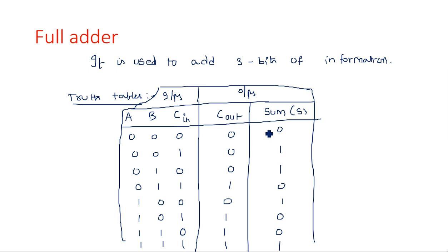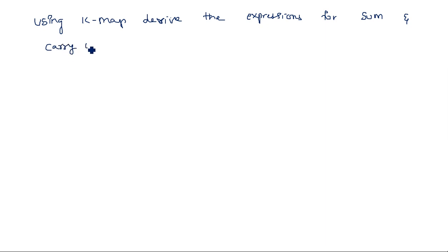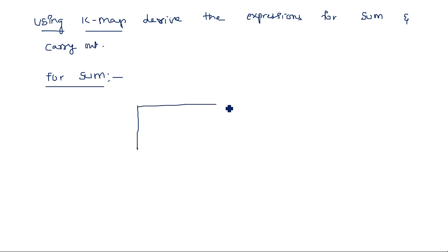Now let us derive the expressions for carry out and sum using K-map. For the sum expression, since there are three variables A, B, and Cin, we use a three-variable K-map.